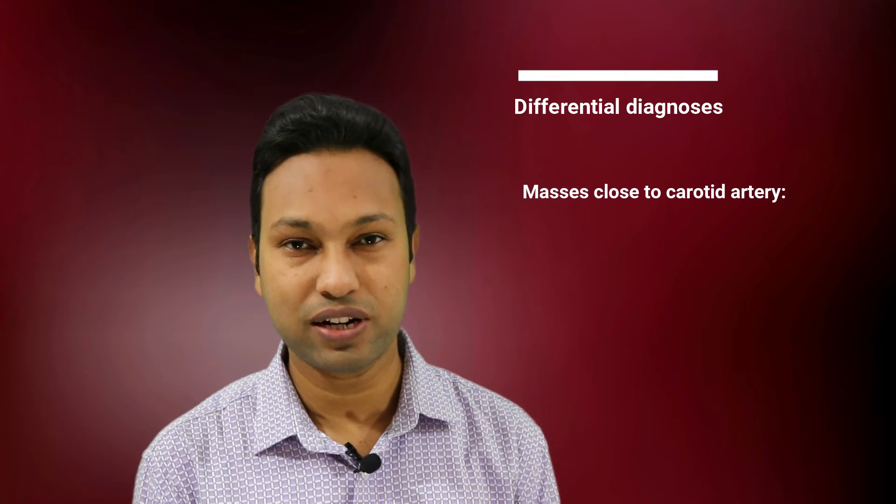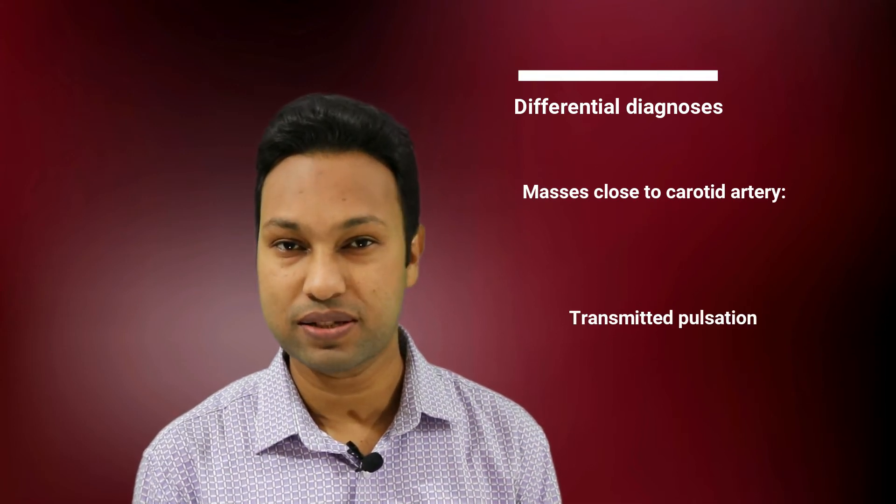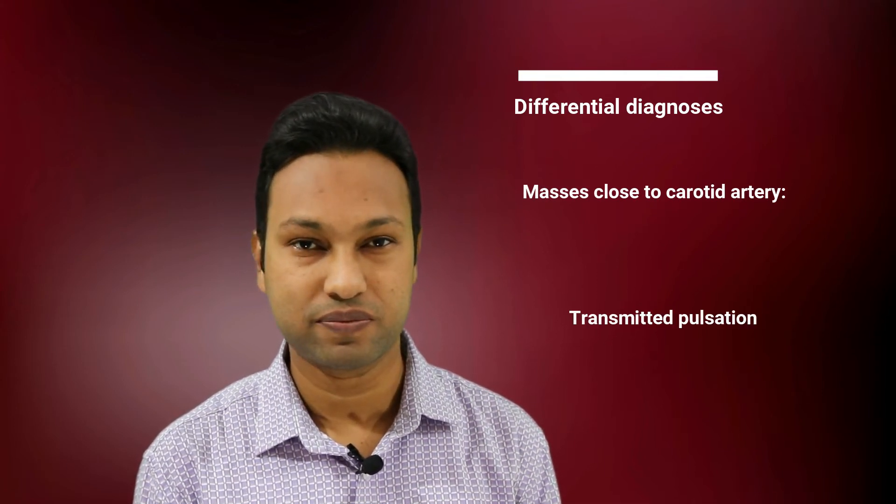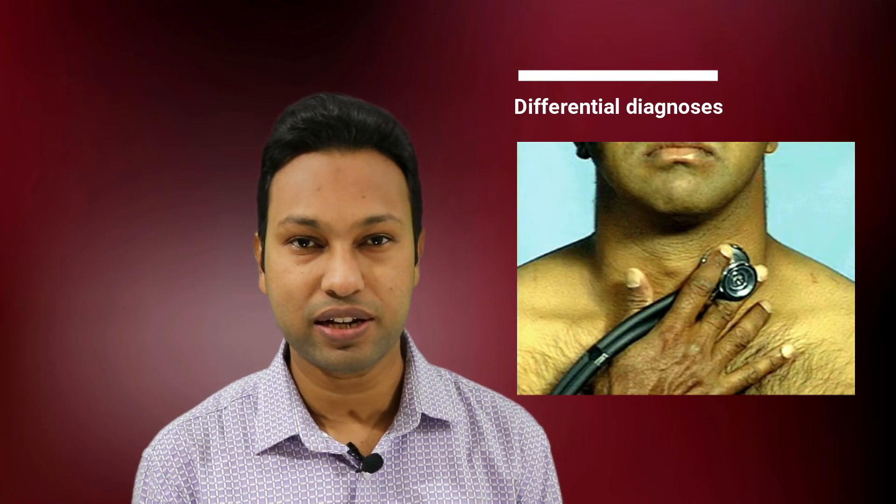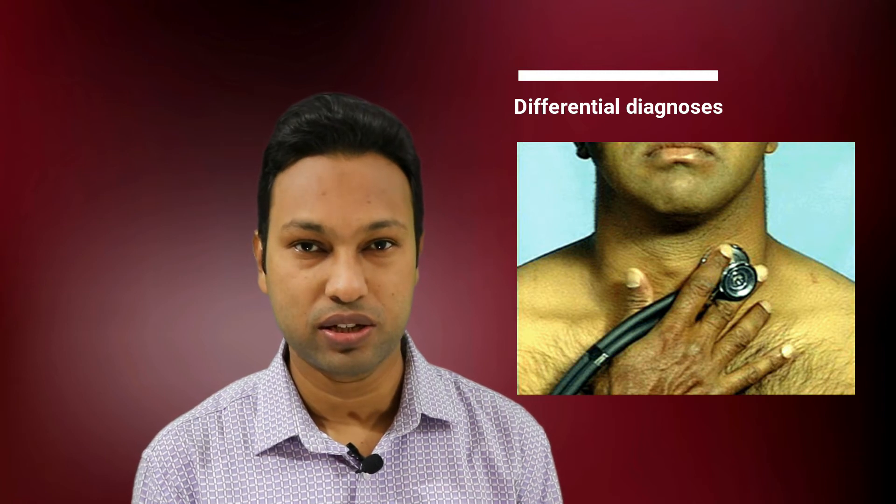In these cases, the pulsation seen or felt at the neck is called transmitted pulsation. All paragangliomas are pulsatile, but in the case of carotid body tumor and glomus jugulare, if we auscultate over the neck we will hear a bruit.